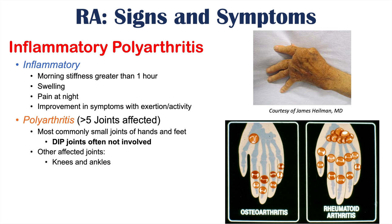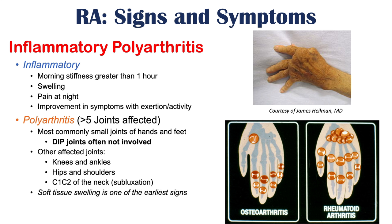Other joints affected include the knees and ankles, hips and shoulders, and the C1-C2 joint of the neck, where there can be some subluxation. Early in the disease process, soft tissue swelling is one of the earliest signs of inflammatory polyarthritis. Another very important finding is a symmetrical distribution of affected joints — if particular joints are affected on one hand, they will also be affected on the other hand.